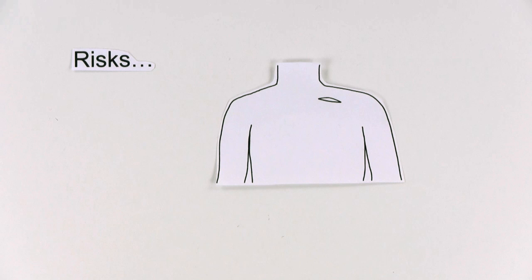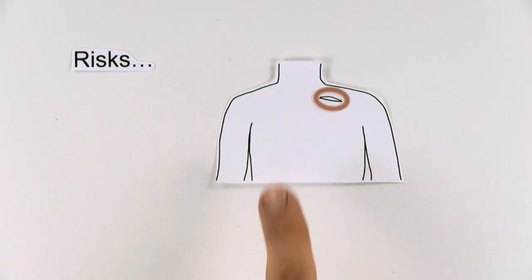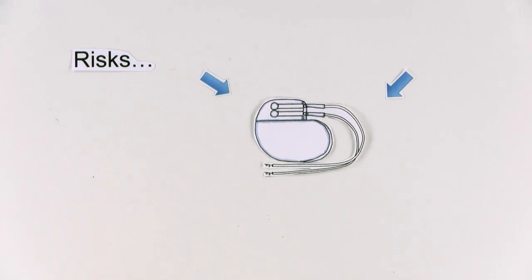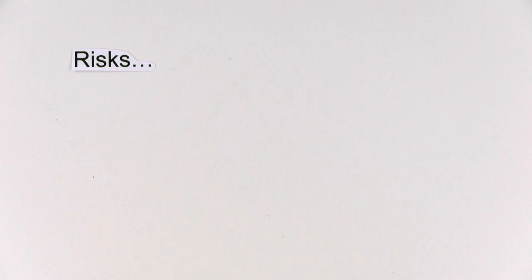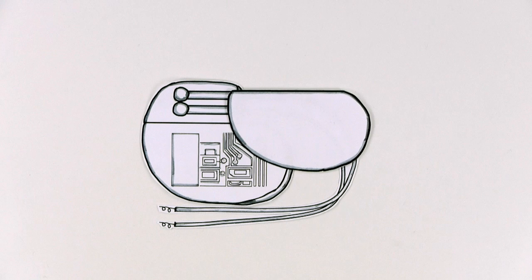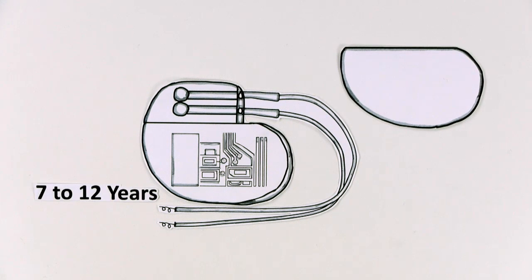For example, she could get an infection at the implant site. She could have sensitivity to the device material or the device may not provide the therapy she needs. The pacemaker runs on a battery, and it lasts 7 to 12 years.